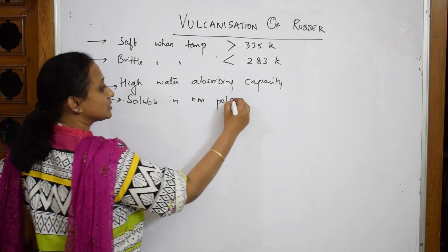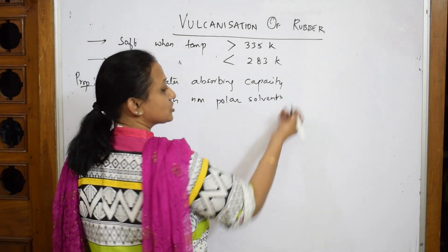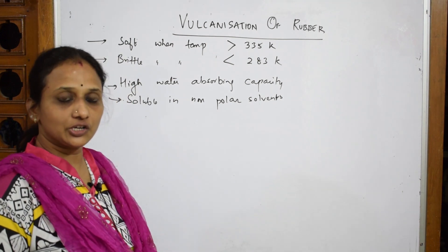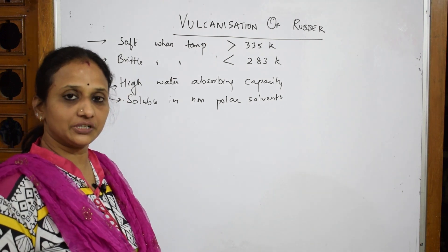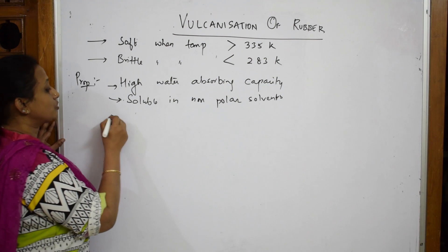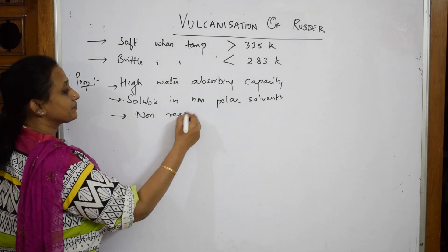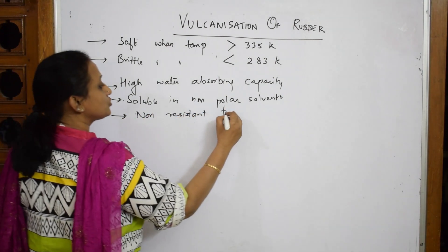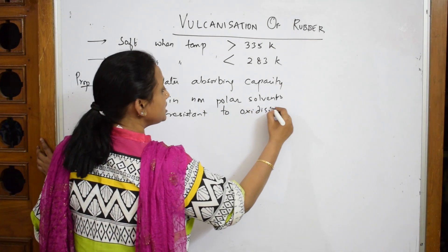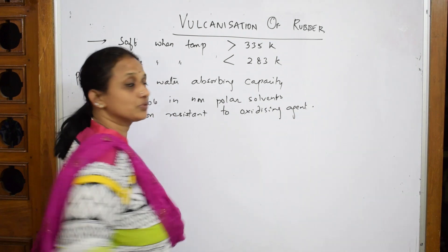Solubility in nonpolar solvents is a problem — rubber should not be soluble, it should be stiff and durable enough to use for many years. Additionally, raw rubber is not resistant to oxidizing agents. Because of all these properties, improvements are needed.